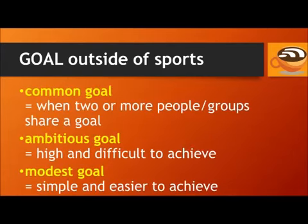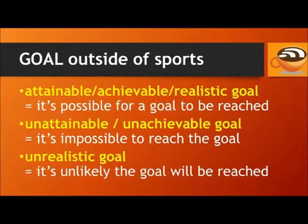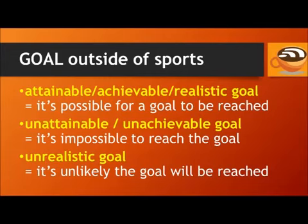A common goal is when two or more people or groups share a goal. An ambitious goal is one that is high and difficult to achieve. And a modest goal is one that is simple and easier to achieve. If a goal is attainable, achievable, or realistic, it means it's possible for that goal to be reached. But if you describe it as an unattainable or unachievable goal, you're saying it's impossible to reach that goal. You can also say the goal is unrealistic — this means it's possible, but unlikely, that the goal will be reached.